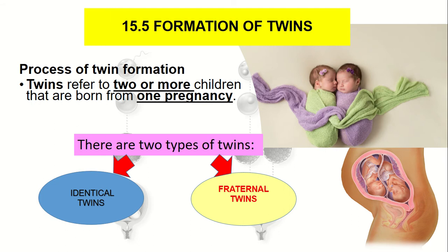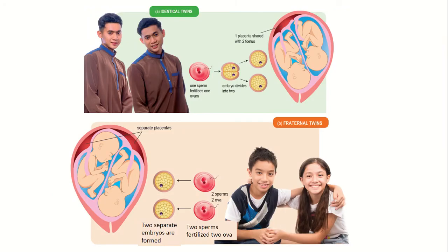Twins can be defined as two or more children born from one pregnancy. These types of twins are divided into two: the first one is identical twins, and the second one is fraternal twins. In Malay, identical twins are called 'kembar seiras' and fraternal twins are called 'kembar tidak seiras'.